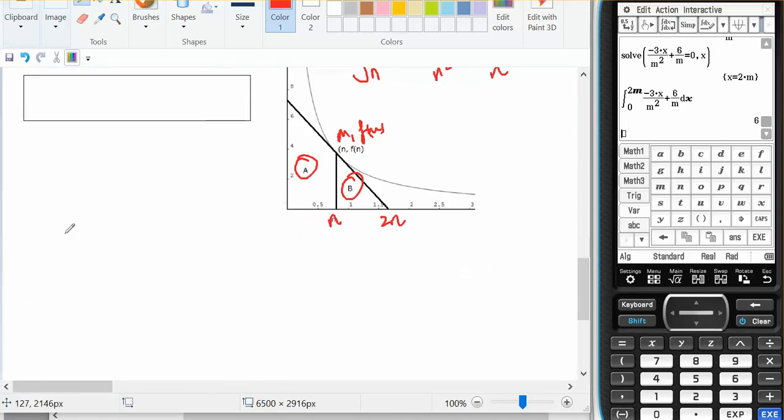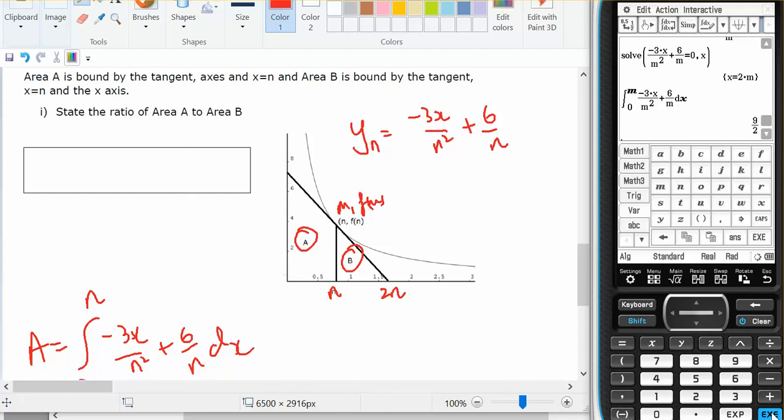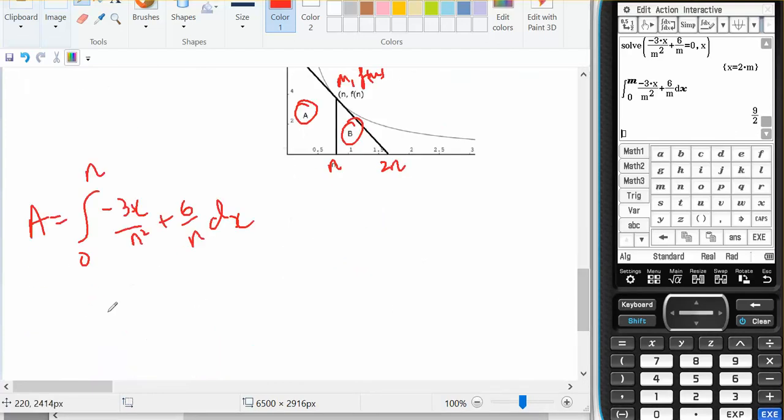So what I'd like to do is to find the area of A, and that will be the integral from 0 to n of minus 3x on n squared plus 6 on n dx. So I want to go just up to m, and that gave me an answer of 9 on 2.